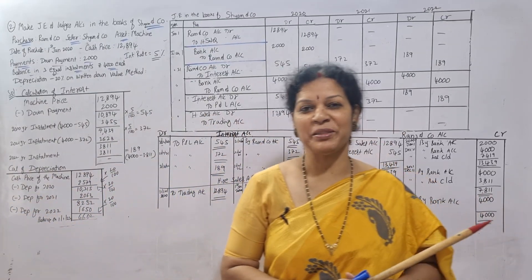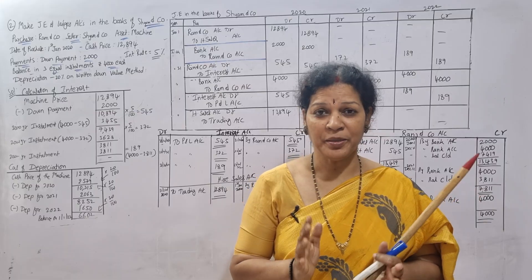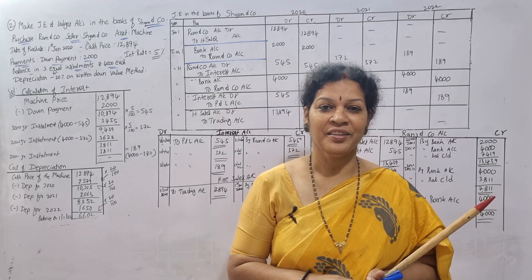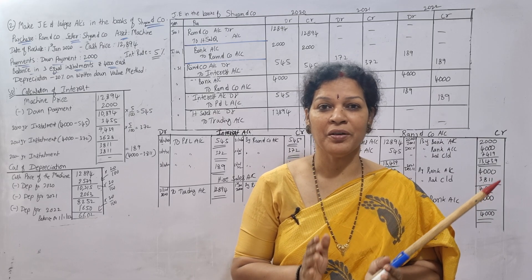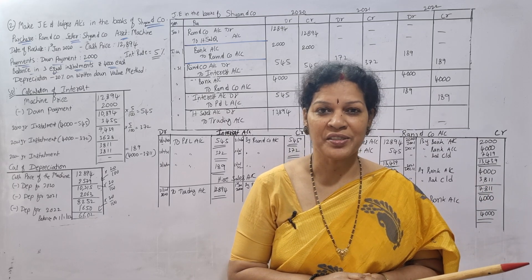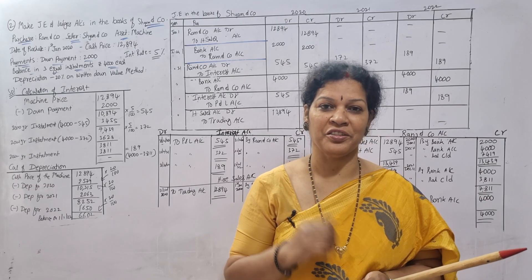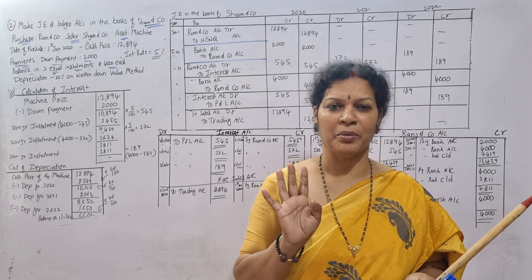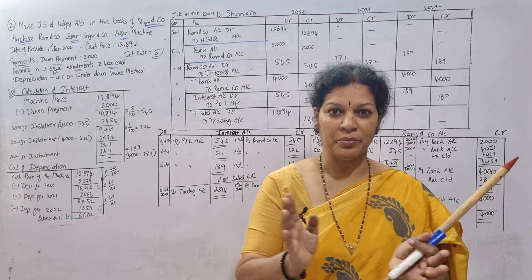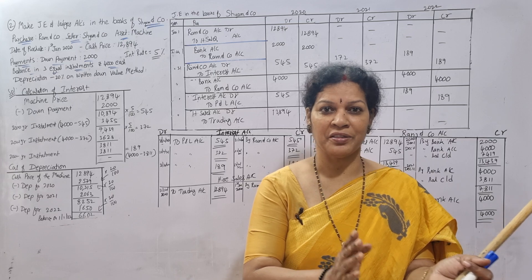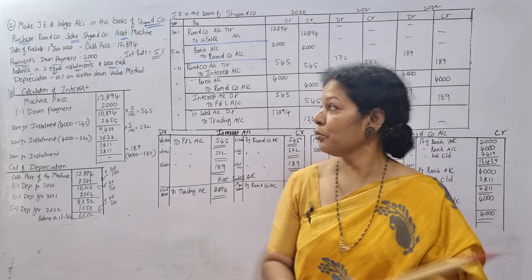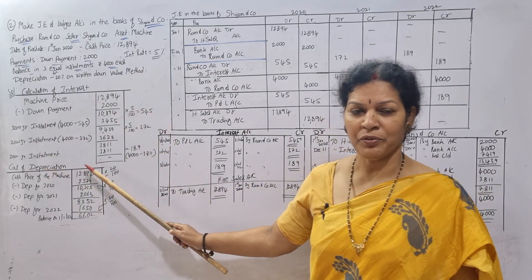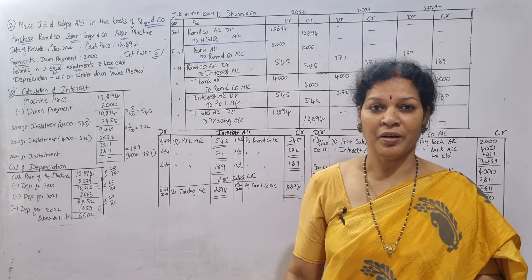Hello dear students, welcome to Commerce and Management Academy. Today we are covering hire purchase accounts — journal entries and ledger accounts in the books of the hire vendor, or seller. We have already seen these in the books of the purchaser. I have taken the same problem from last class so you get more clarity. The calculation of interest and depreciation we have already done.